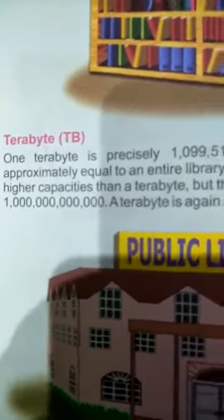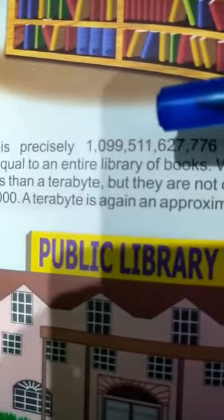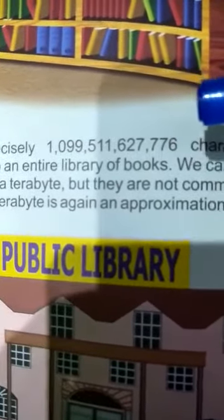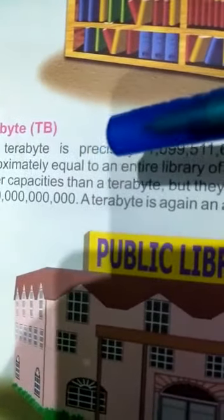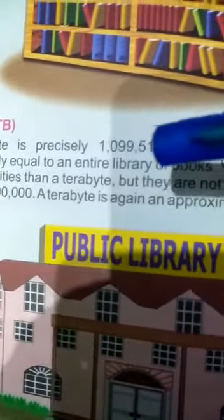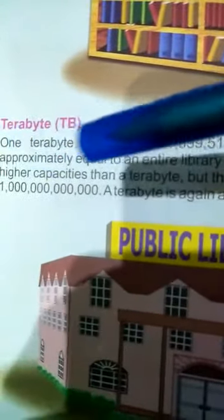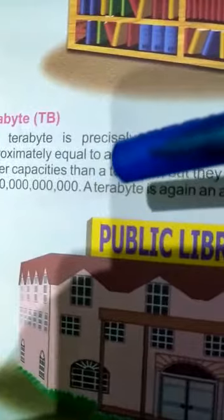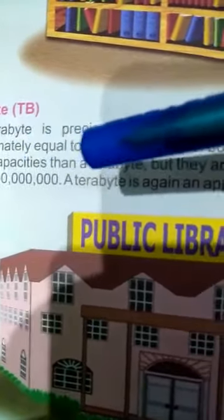The next topic is terabyte. One terabyte is precisely 1,099,511,627,776 characters. This is approximately equal to an entire library of books. We can measure even higher capacities than a terabyte, but they are not common. Giga means one trillion — that is, one followed by twelve zeros.